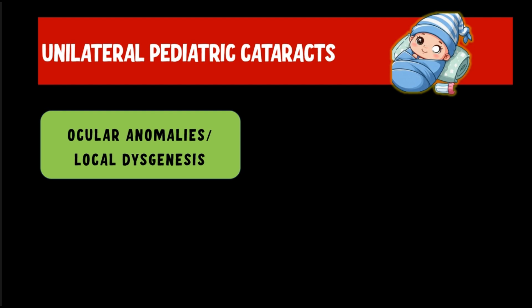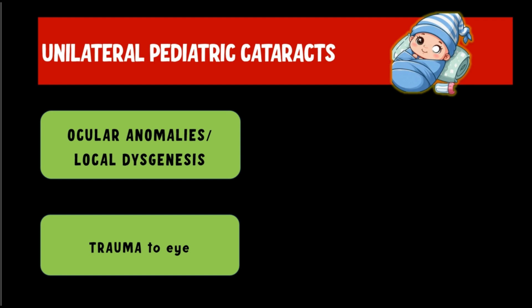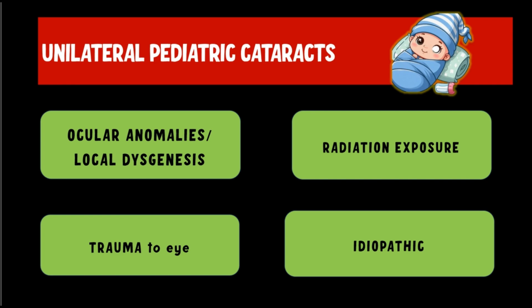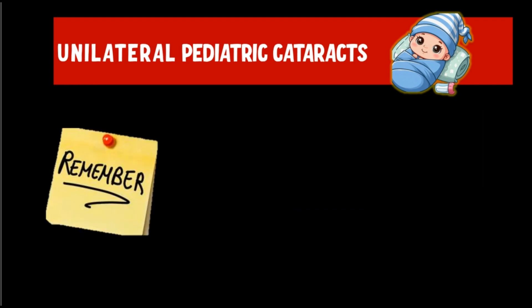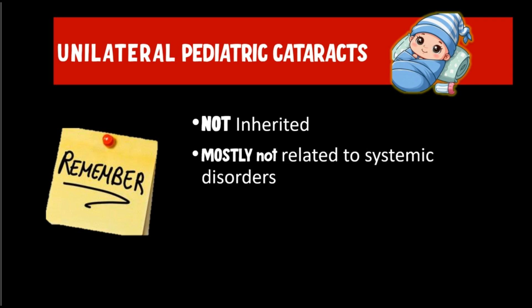First, let's talk about a unilateral cataract. If the child has a unilateral cataract, the causes can be broadly classified into four types: ocular anomalies and local dysgenesis of the affected eye, trauma to the eye, radiation exposure to the eye, and sometimes an idiopathic cause where we just don't know why it's happening. It would not be wrong to say that unilateral cataracts are usually sporadic — meaning there is no family history, no systemic disease, and the affected infants are otherwise healthy.